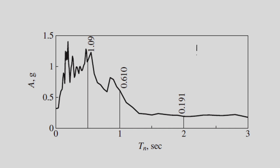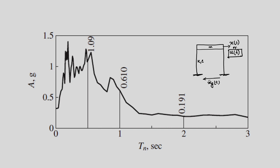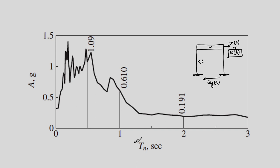We have a single degree of freedom system where the mass is m, and then collectively two columns offer some lateral stiffness and damping. We have a ground excitation x_g double dot of t. We defined both absolute deformation and relative deformation with respect to ground. We used the relative deformation to find out the response and evaluated the maximum response — it may be displacement, velocity, or acceleration. Then for a given damping, we repeat the exercise for different Tn and we get this plot.